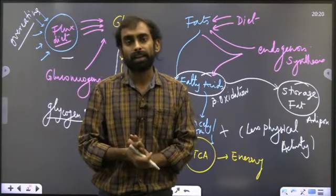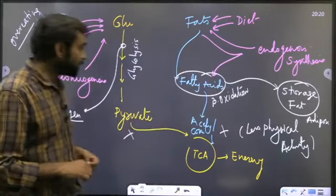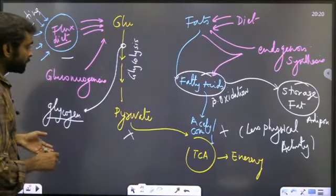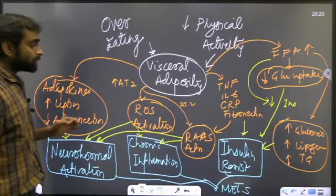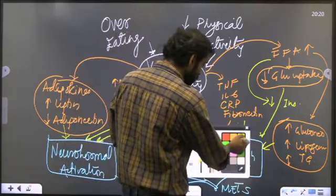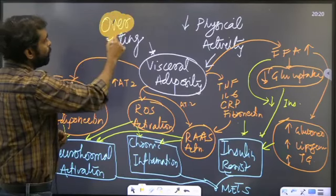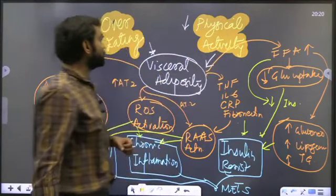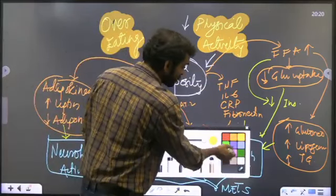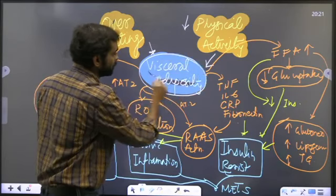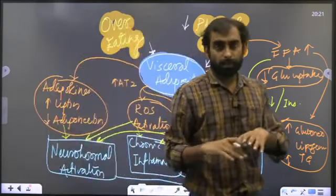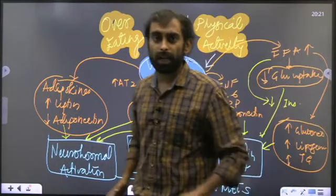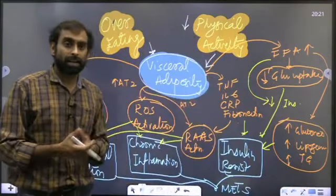Endogenously formed fatty acids get stored in adipose tissue as fat. But if you have less physical activity, this line is cut off. If you continue overeating but have less physical activity, the storage channel gets activated. Lot of storage takes place.